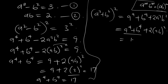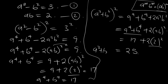We have a to the power 4 plus b to the power 4 equal to 17, plus 2 times 2 squared from equation 2. So we have 17 plus 8, which is 25. That means a squared plus b squared, all squared, equals 25.